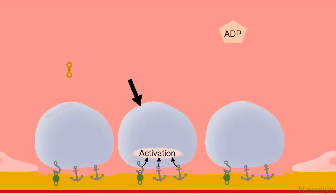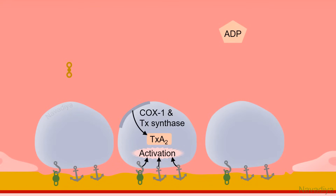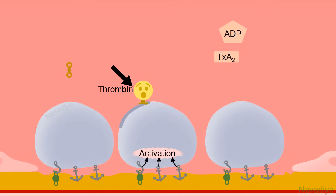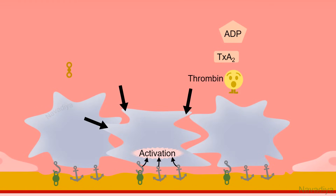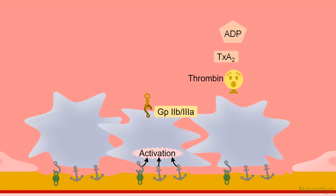From the membrane phospholipid of the activated platelet, cyclooxygenase and thromboxane synthase start producing thromboxane A2, which is also released into the blood. Parallel to this, thrombin is generated on the platelet surface as a result of activation of the coagulation cascade, and it also joins ADP and thromboxane A2. Next, activated platelets undergo a change in shape — they extend finger-like projections which increase their surface area. Lastly, activation causes conformational changes in the surface receptor glycoprotein 2b3a, which is now capable of binding with fibrinogen.